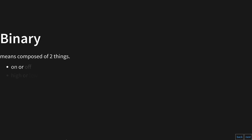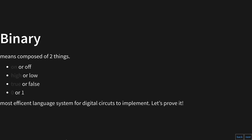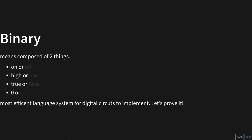Binary means composed of two things — it's either on or off, yes or no, true or false, zero or one. Decades of research has led us to the conclusion that a binary language system is the most efficient language system for digital circuits to implement.